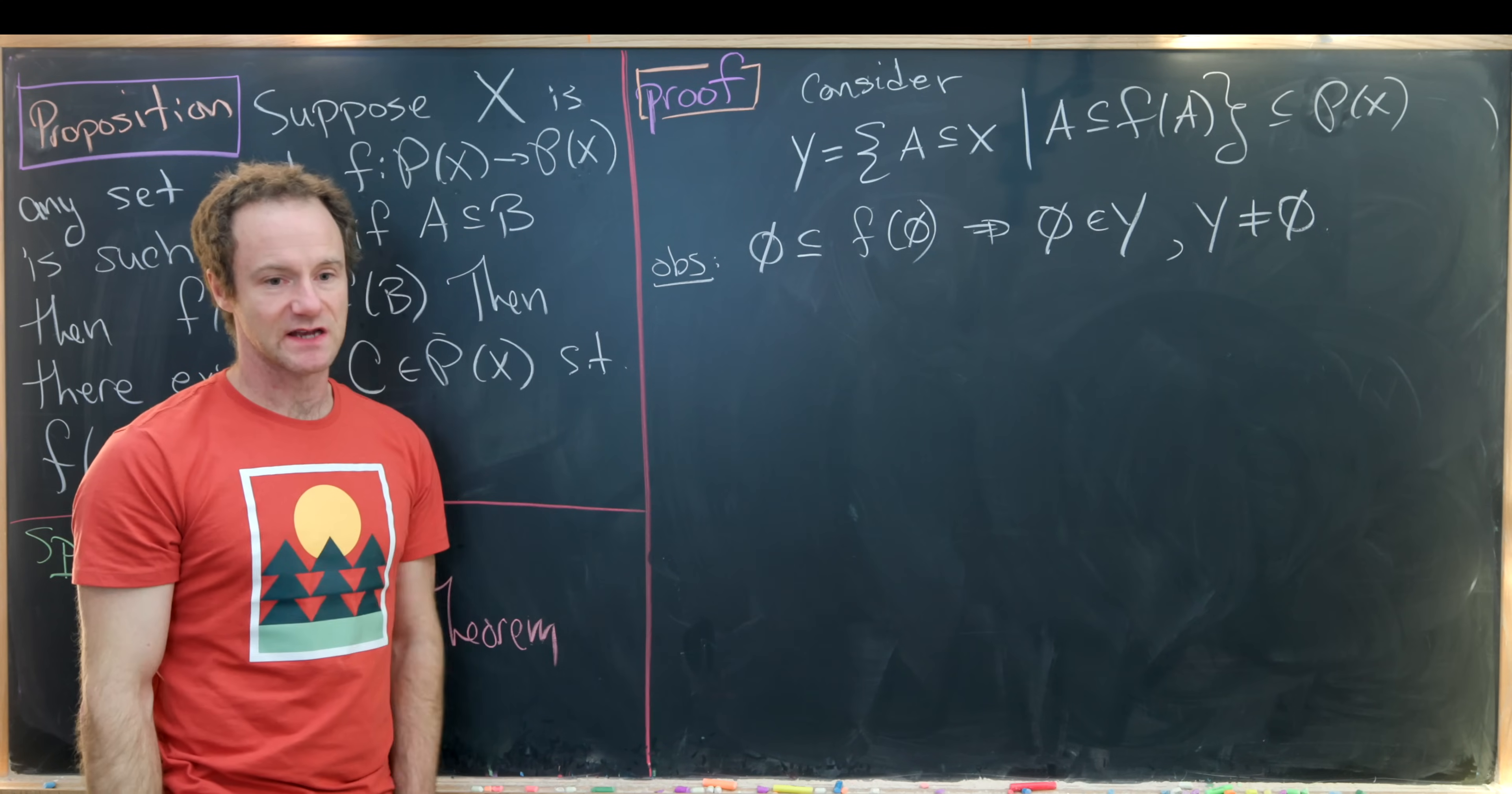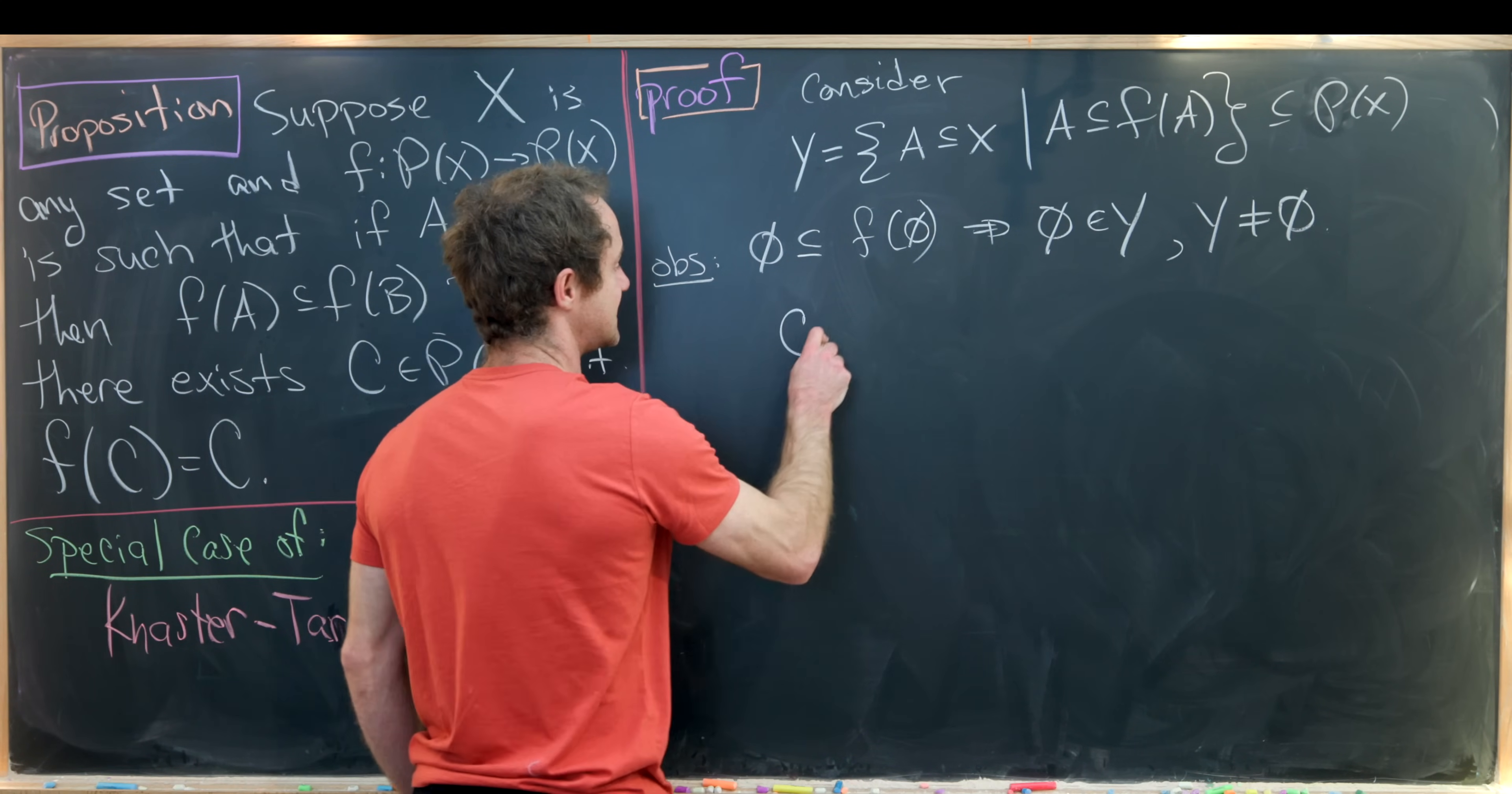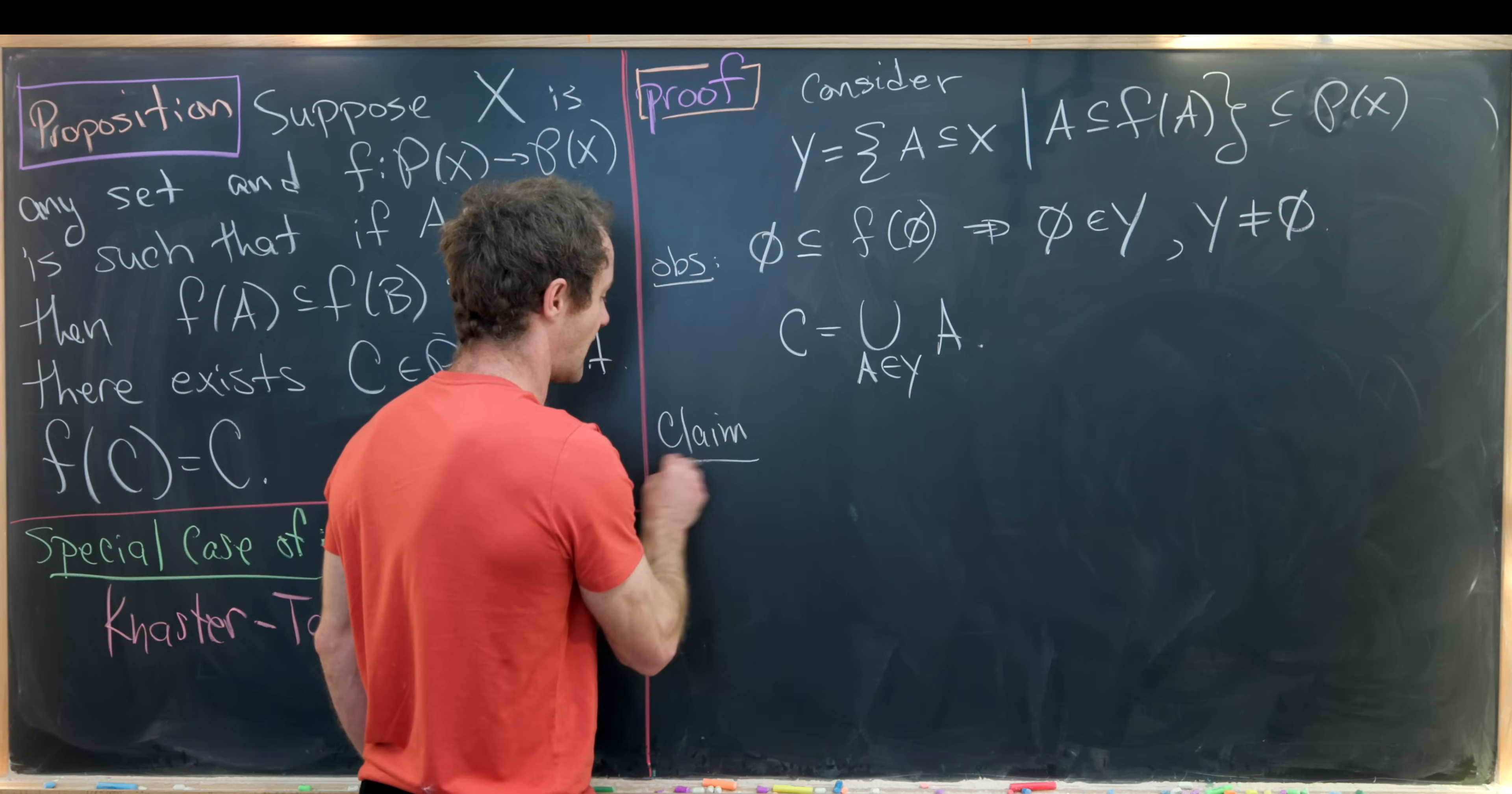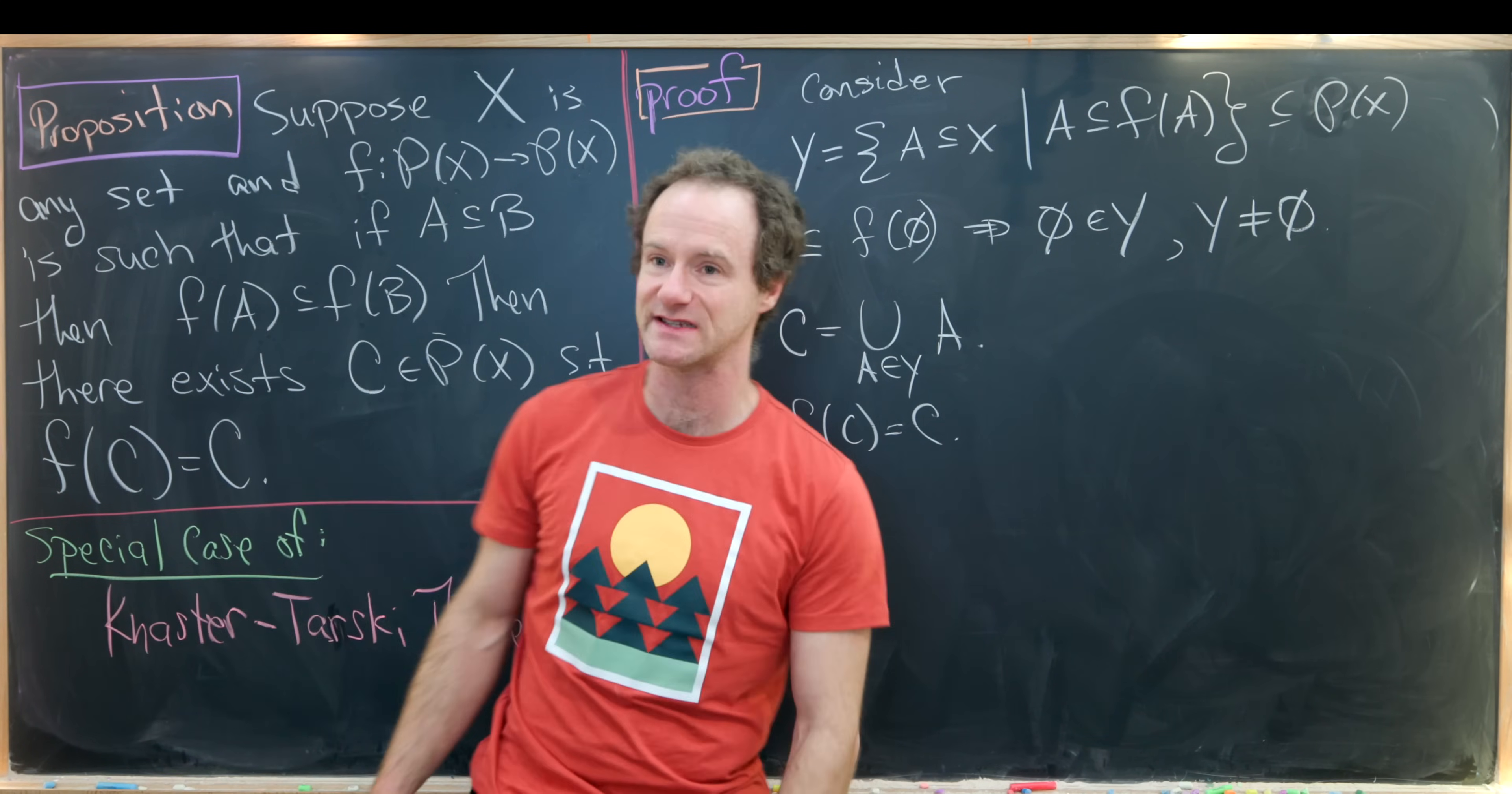So since y is non-empty we can talk about taking the union of all of the elements from y. So let's do that. So let's set c equal to the union of all a in y of a. And I want to finish this whole thing off with the following claim and that is f of c is equal to c. In other words c is our fixed point in this setting.